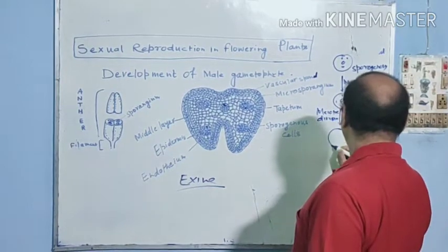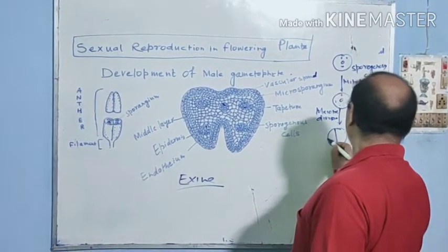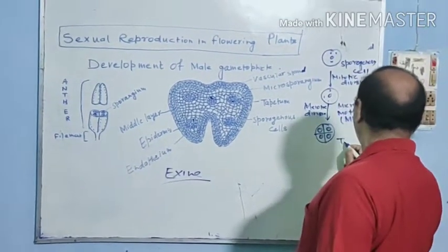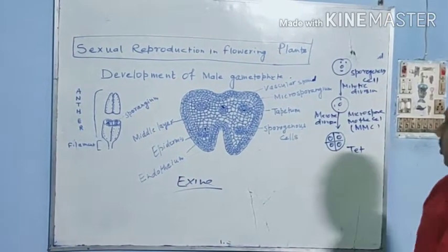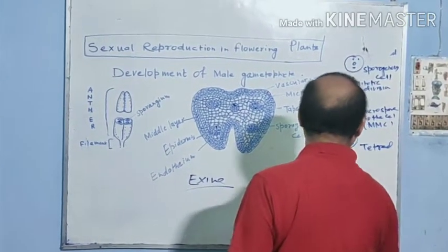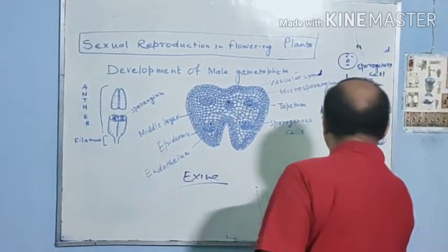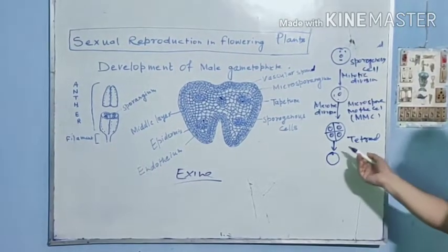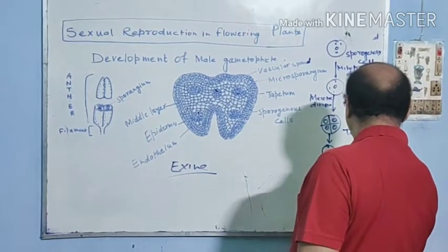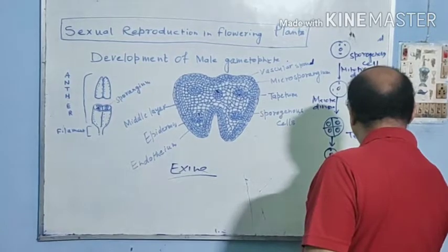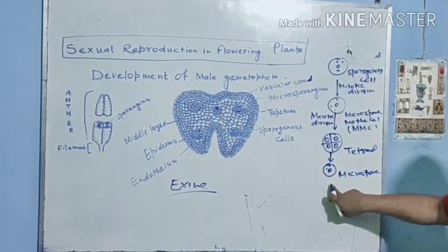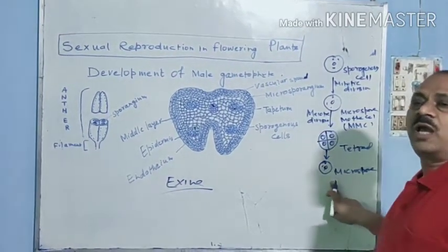The sporogenous cell undergoes meiosis to form four microspores. Four microspores together are known as a tetrad — 'tetra' means four. We take one unit known as a microspore. The microspore is formed by the process of meiosis, so it is a haploid cell.